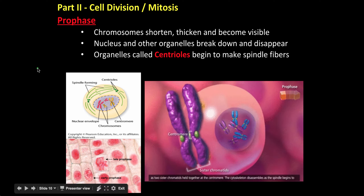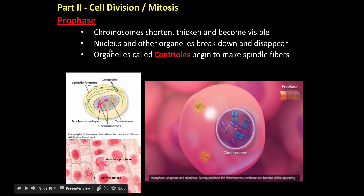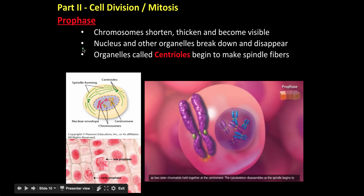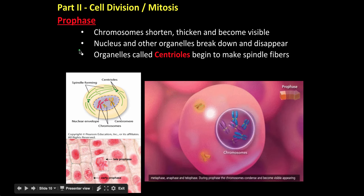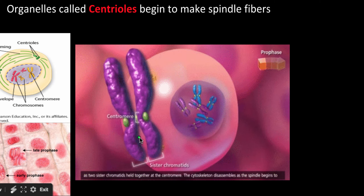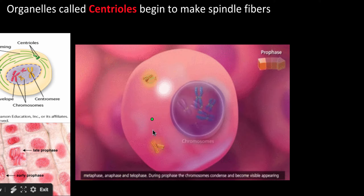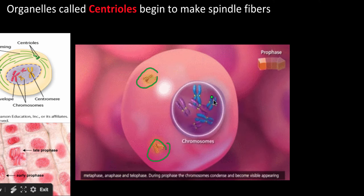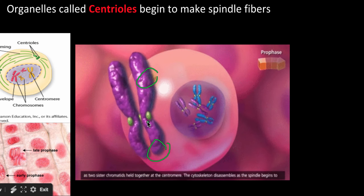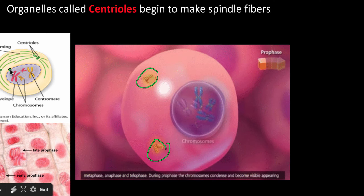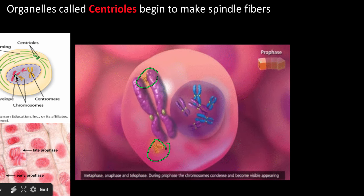Prophase is the first phase of mitosis. In prophase, chromosomes shorten, thicken, and become visible, forming those dense chromosomes. The nucleus and other organelles start to break down and disappear. Organelles called centrioles begin to make spindle fibers. You can see the centrioles in this diagram — the nucleus starts to disappear and the chromosomes that are being formed come out and thicken. Those are the major parts of prophase: getting rid of that nucleus and getting ready to move those chromosomes around.